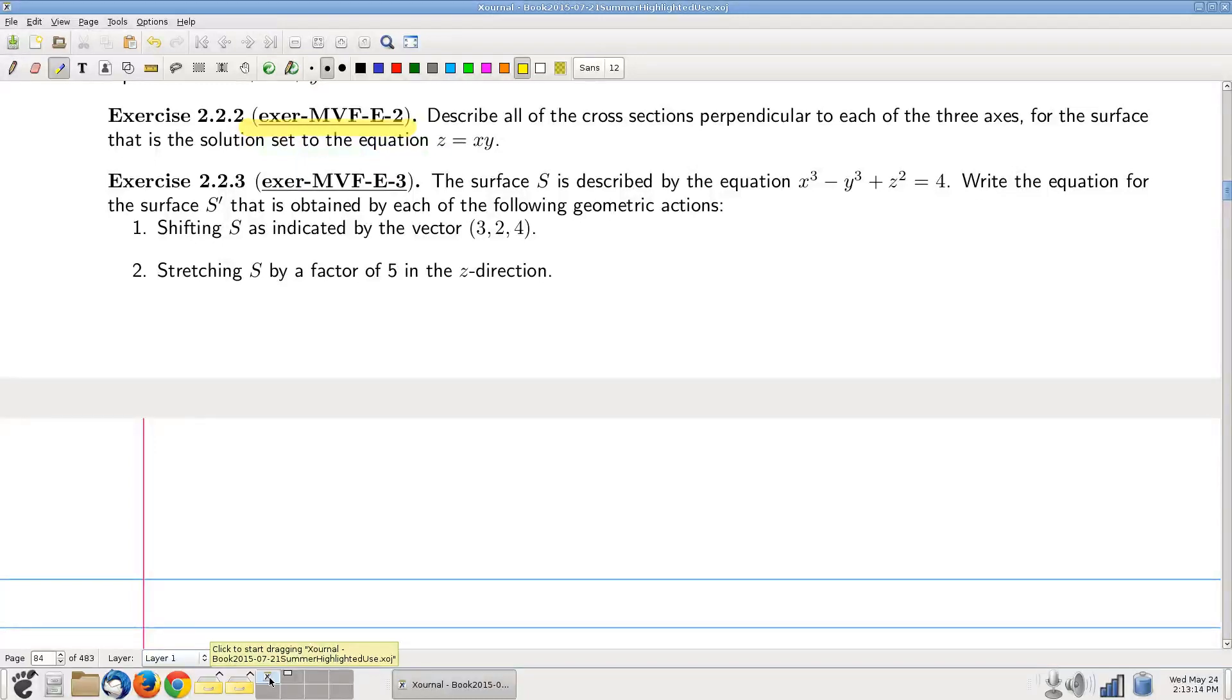OK, so I'm going to describe all of the cross sections of this thing. So we've got a surface that's described by this equation. And specifically, we'll see the cross sections perpendicular to each of the three axes. So I'll meet every possible way to do this. OK, z equals xy.